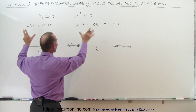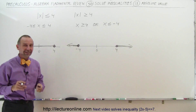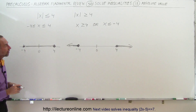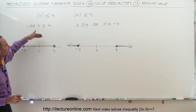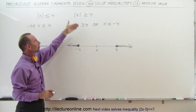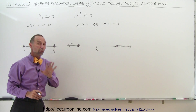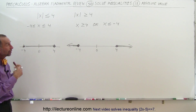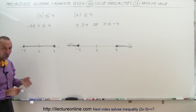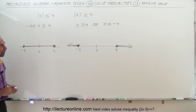And that's how you solve these types of inequalities that have absolute value signs. You simply translate from there to there, and from there to there. In the next videos, we'll show you something a little bit more complicated, but the methodology will be exactly the same. That's how you do it.